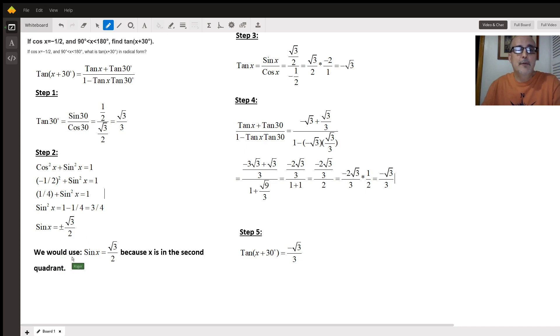Now we're going to use sine of x equals the square root of three over two because x is in the second quadrant, as given in the original problem.